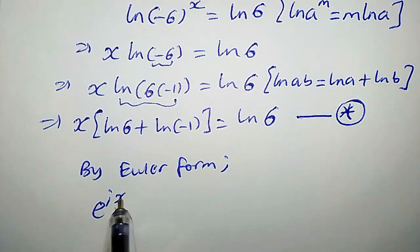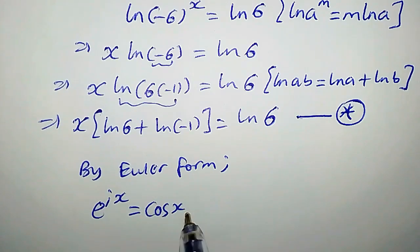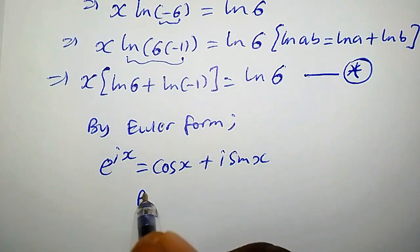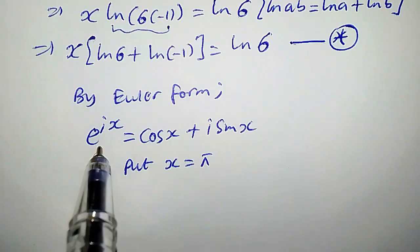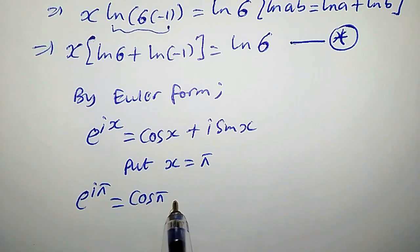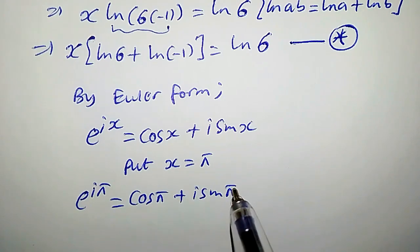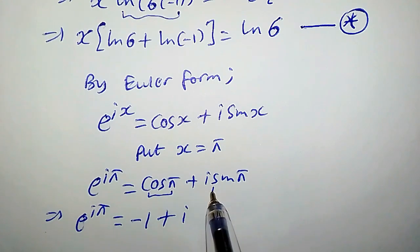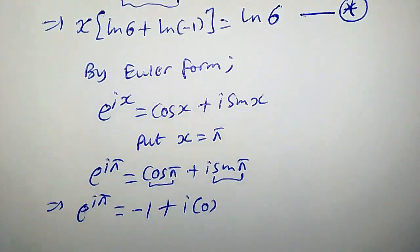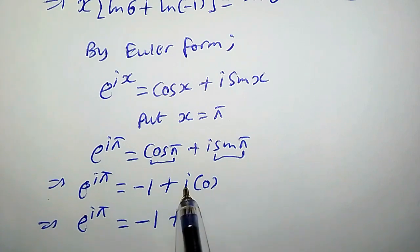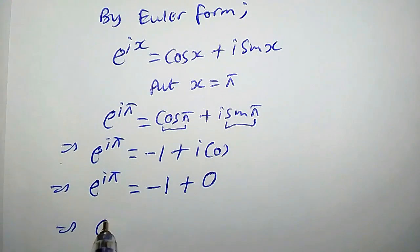Recall that by Euler's formula, e^(ix) = cos(x) + i·sin(x). Suppose we put x equal to π into this equation. We have e^(iπ) = cos(π) + i·sin(π). Cos(π) is minus 1, and sin(π) is 0, so we have e^(iπ) = −1.